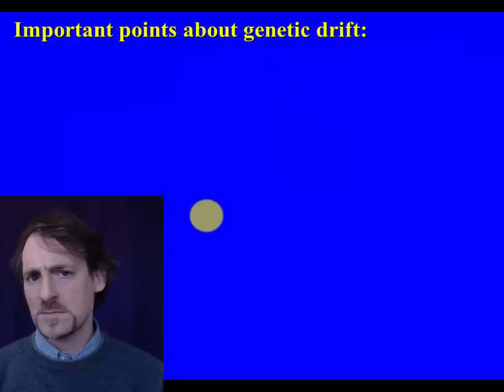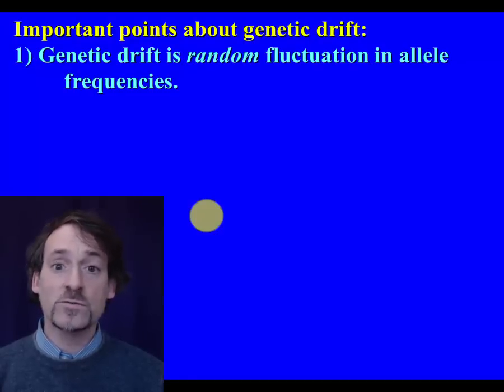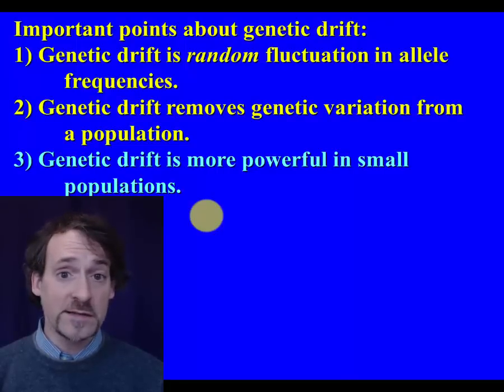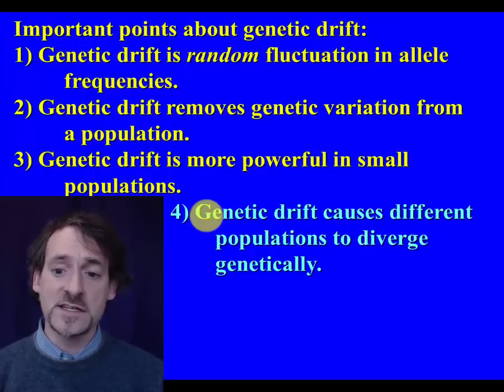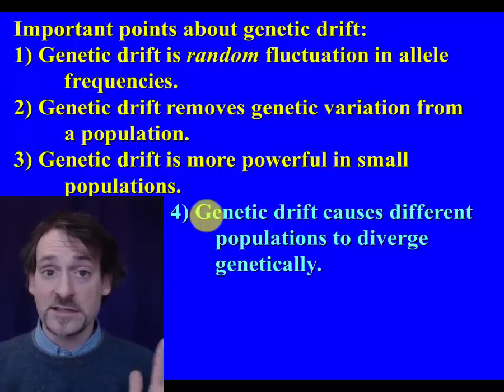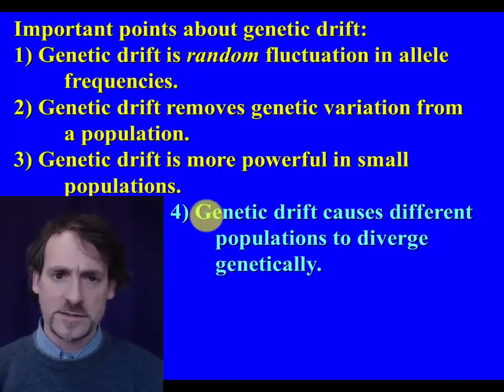So let's recap some of the things that we've learned about genetic drift. Genetic drift consists of random fluctuations in allele frequencies. It's totally different from selection. It tends to remove genetic variation from a population over time. And it does that more quickly in a small population. Population size really matters when you're thinking about genetic drift. Finally, genetic drift has a tendency to cause populations to get different from one another genetically. It causes them to diverge genetically.